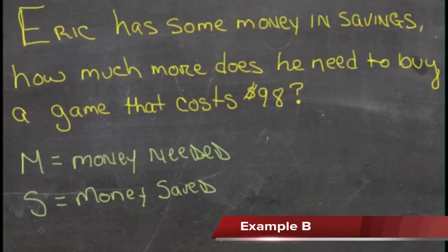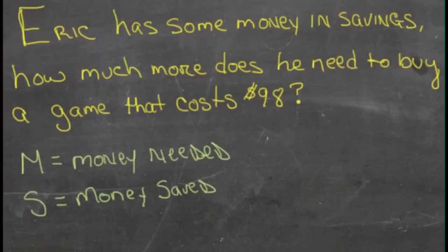We don't know how much money Eric has now, and we don't know how much he's going to need if we take the money that he has and put it toward the $98 cost of the game. So we're going to use two variables. One, S, represents the money that he's saved, and the other, M, represents the money that he needs.